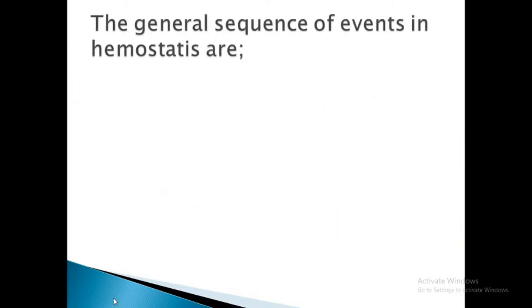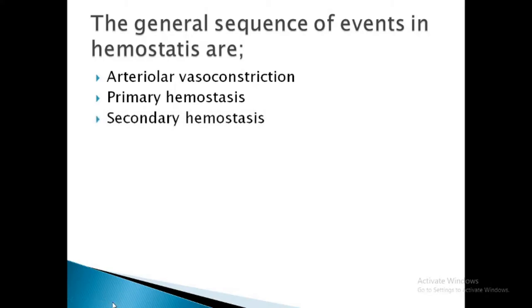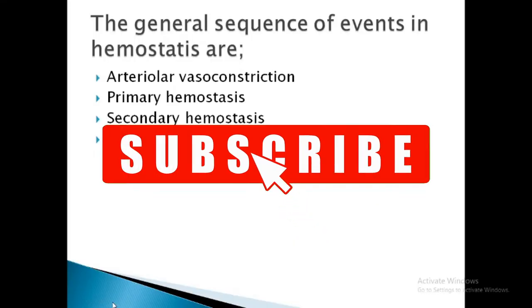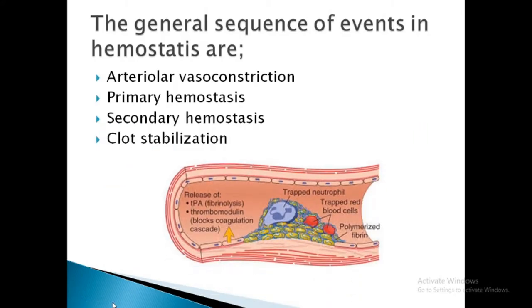The general sequence of events during hemostasis are: 1. Arteriolar vasoconstriction, 2. Primary hemostasis, 3. Secondary hemostasis, and 4. Clot stabilization.